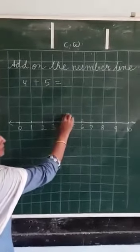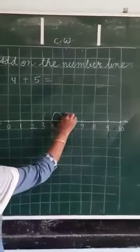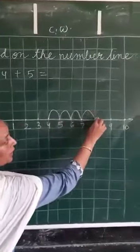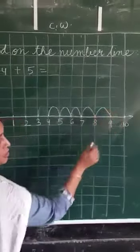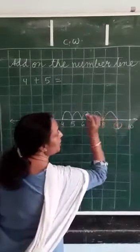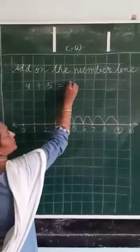1, 2, 3, 4 and 5. Now we reach at 9. So our answer is 9. So write 9 over here.